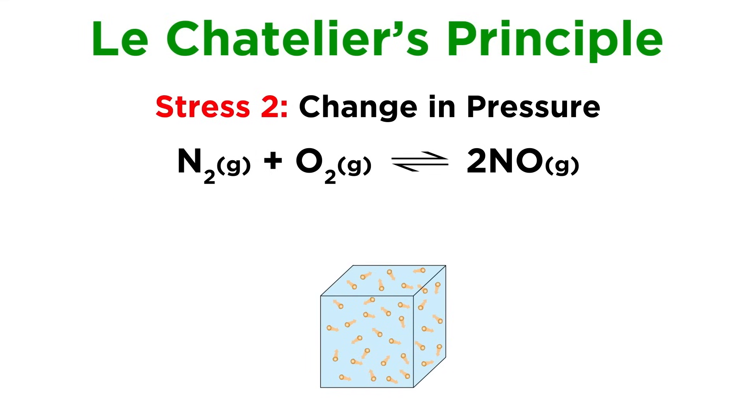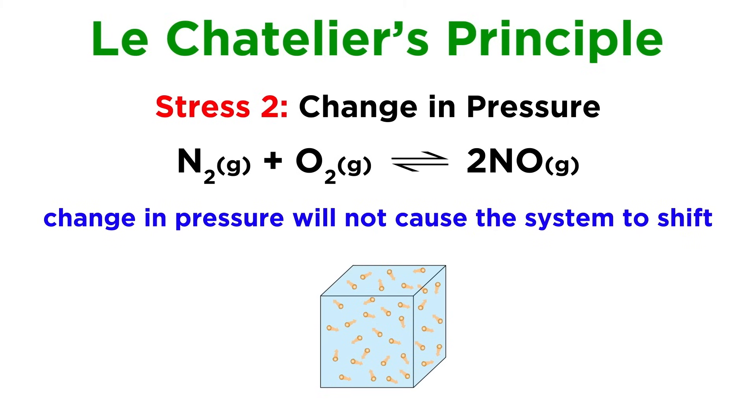If they were to be the same, such as with this equilibrium, there would be no ability to alleviate additional pressure one way or another as a result of shifting the equilibrium, so a change in pressure will not cause any shift.